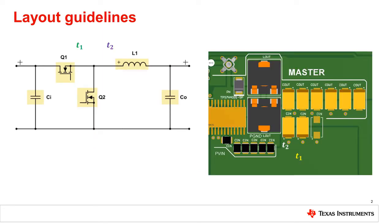On the right is a simplified version of the TPS7H4001-SP EVM layout, which is a space-grade buck converter. The previous advice is shown in a real-world example.